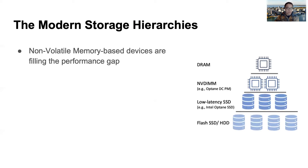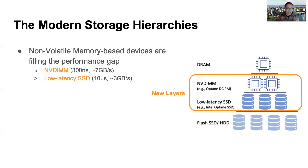Recently, with the development of non-volatile memory techniques such as 3D stacked memory, we have seen many new high-performance devices filling the performance gap between memory and storage. Excellent examples include byte-addressable NVM DIMMs such as Optane DC persistent memory, as well as low-latency SSDs such as Intel Optane SSD. These devices have become new layers in modern storage hierarchies.